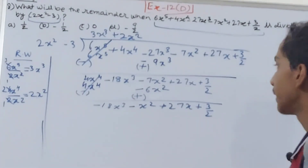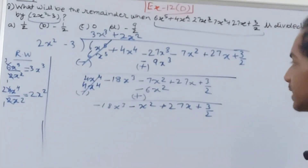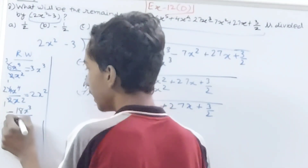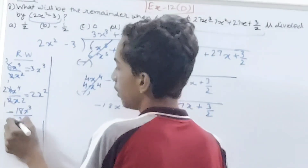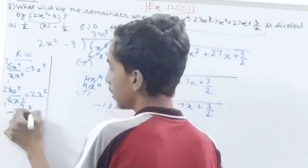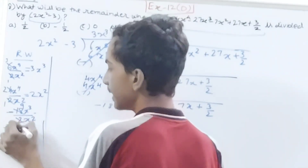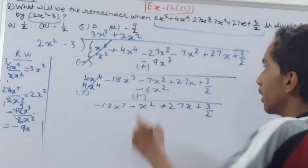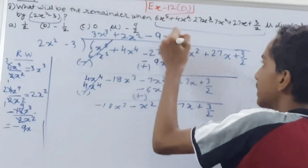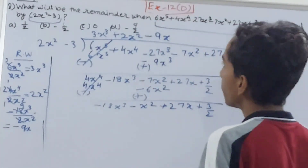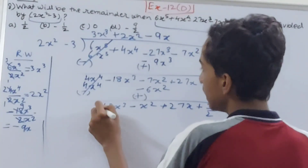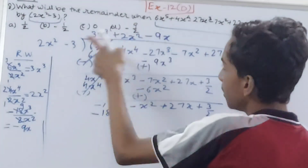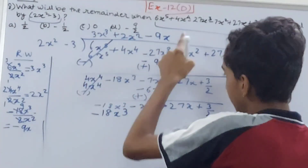Next, minus 18x cubed divided by 2x squared: 3 minus 2 is 1, so this gives minus 9x as our third quotient term. Multiply: minus 9x into 2x squared gives minus 18x cubed, and minus 9x into minus 3 gives plus 27x.